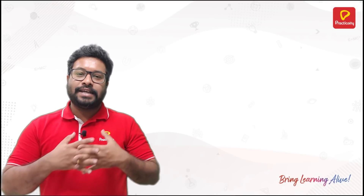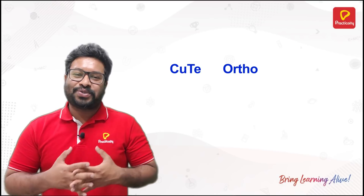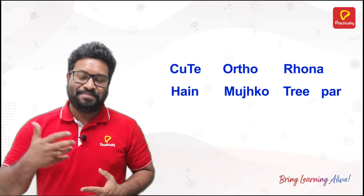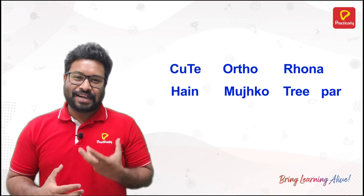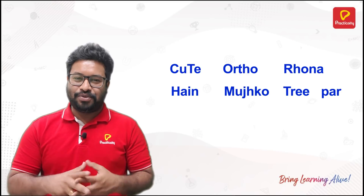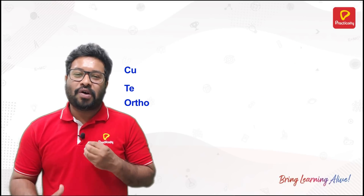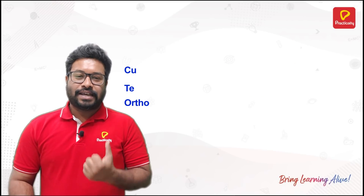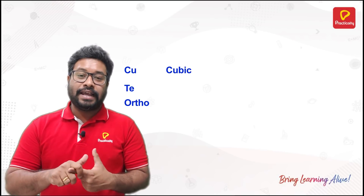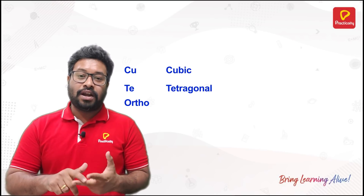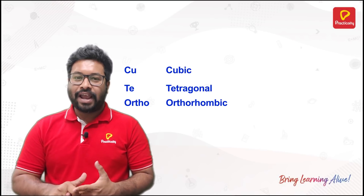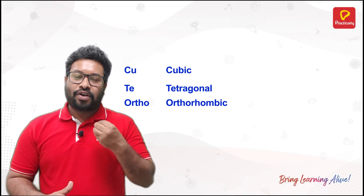The trick is: 'Cute ortho, rona hai muchko tripper.' I know it sounds funny, but it is going to help you. Cute — cu for cubic, te for tetragonal, ortho for orthorhombic.